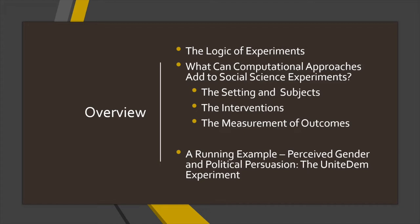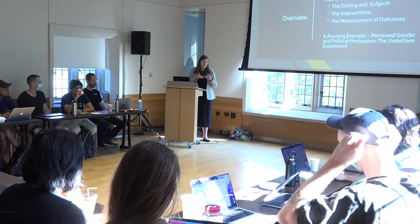In each section I'll give an overview of what's traditionally done in social science experiments, then use a running example — work co-authored with Chris and other scholars called 'Perceived Gender and Political Persuasion' or the UniteDem experiment. I'll also give a shout-out style introduction to other research using about ten other examples, three or four per section, to give you a sense of the scope of what's going on in computational social science experiments.